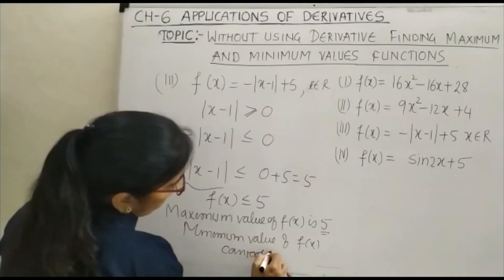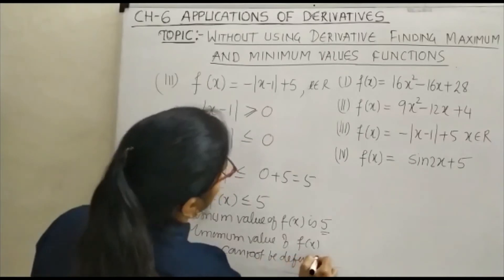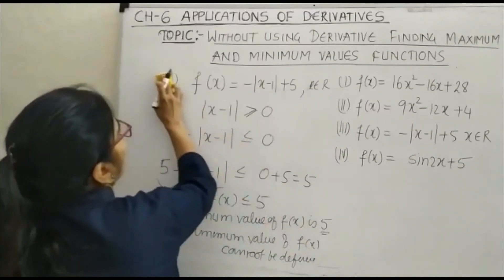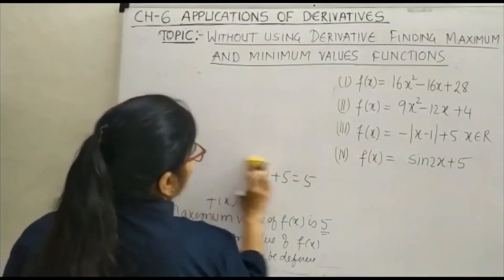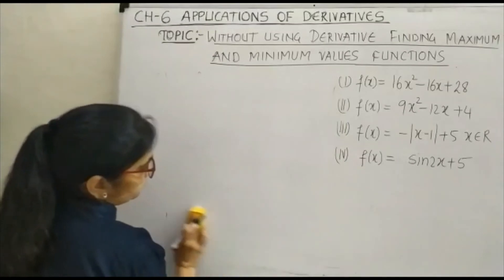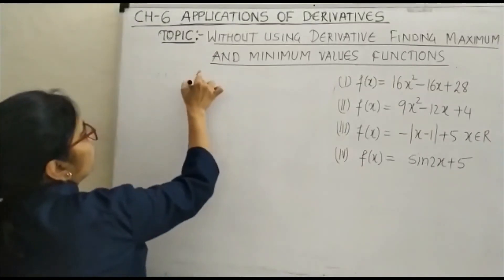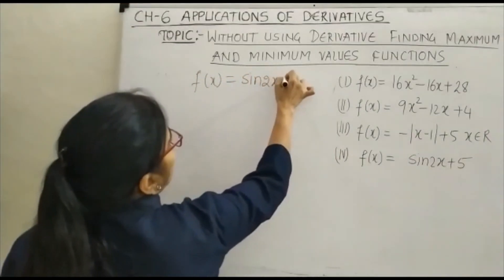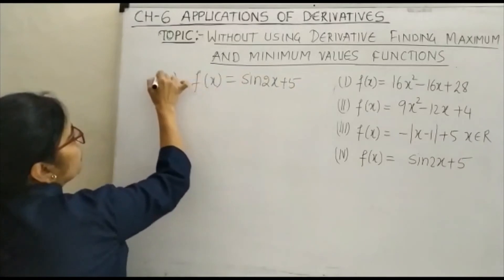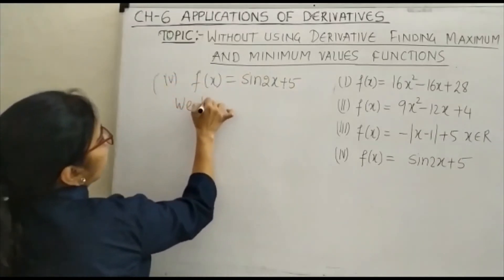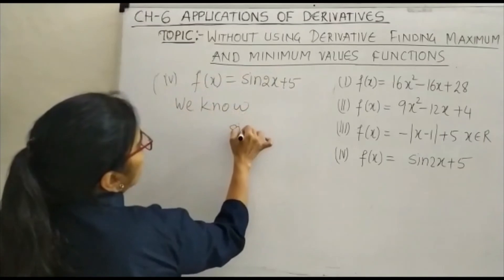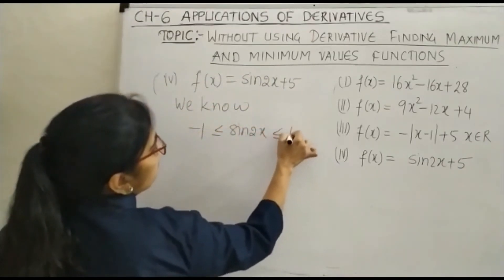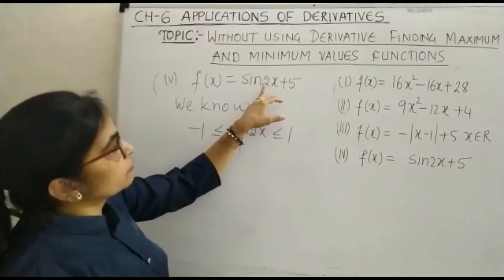The minimum value of f(x) cannot be defined because this can be made as small as possible. Moving on to question number 4: f(x) = sin(2x) + 5. We know that sin(2x) is greater than or equal to -1 and less than or equal to 1.